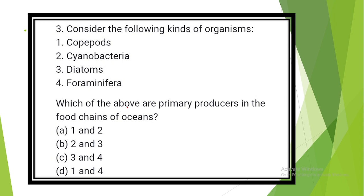Third question. Consider the following kinds of organisms. Which of the above are primary producers in food chains of the ocean? The answer is Option B, 2 and 3: Cyanobacteria and diatoms.